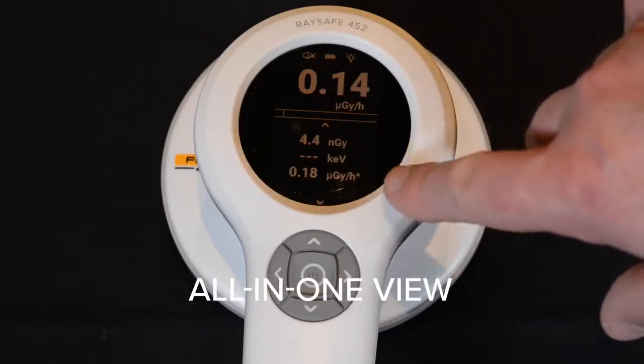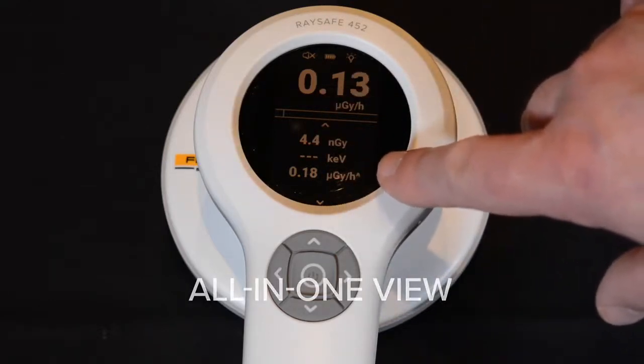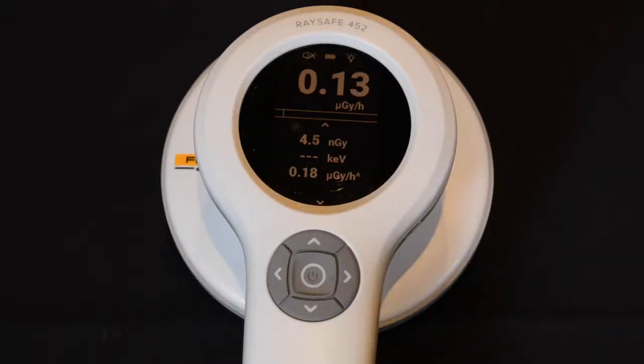When using other instruments, you might have several modes, but with the 452 you have everything all in one. There is no need to select anything. It's all automatic.